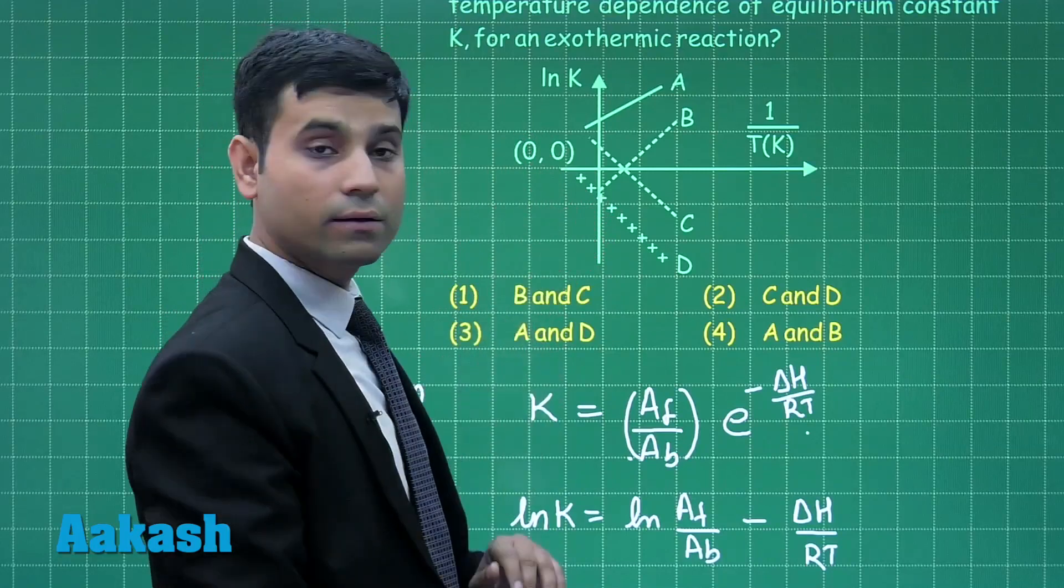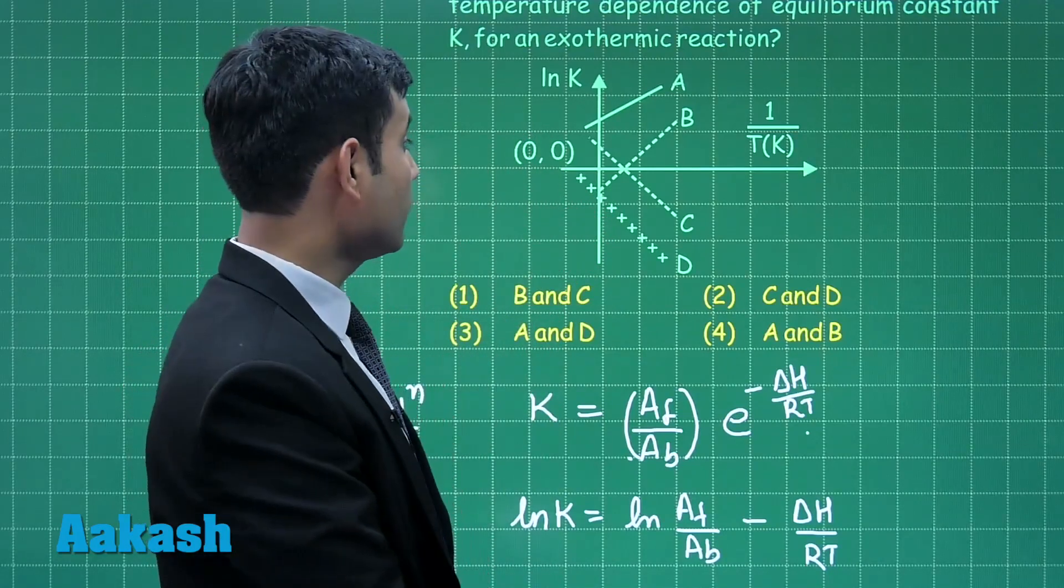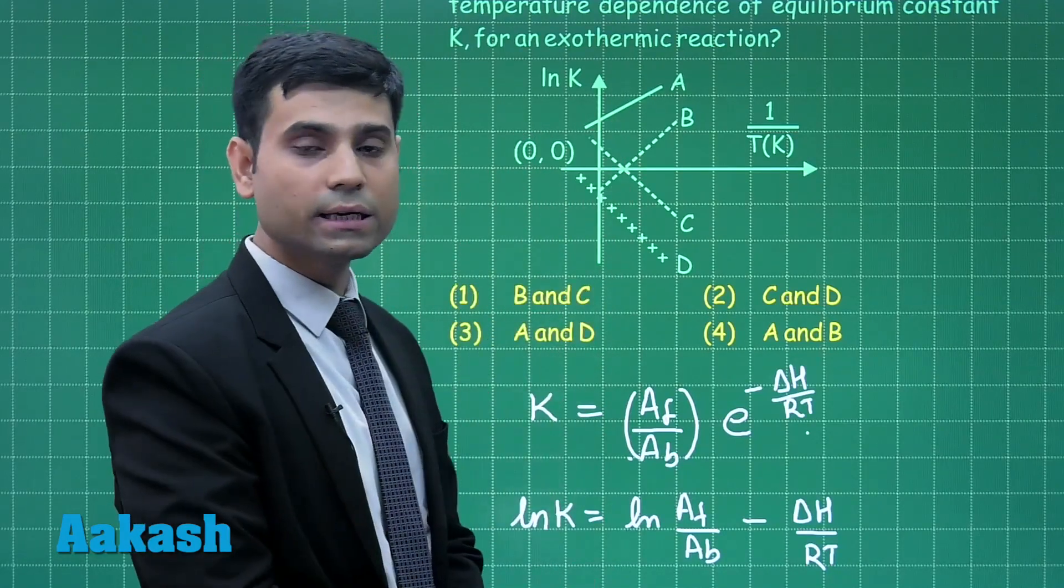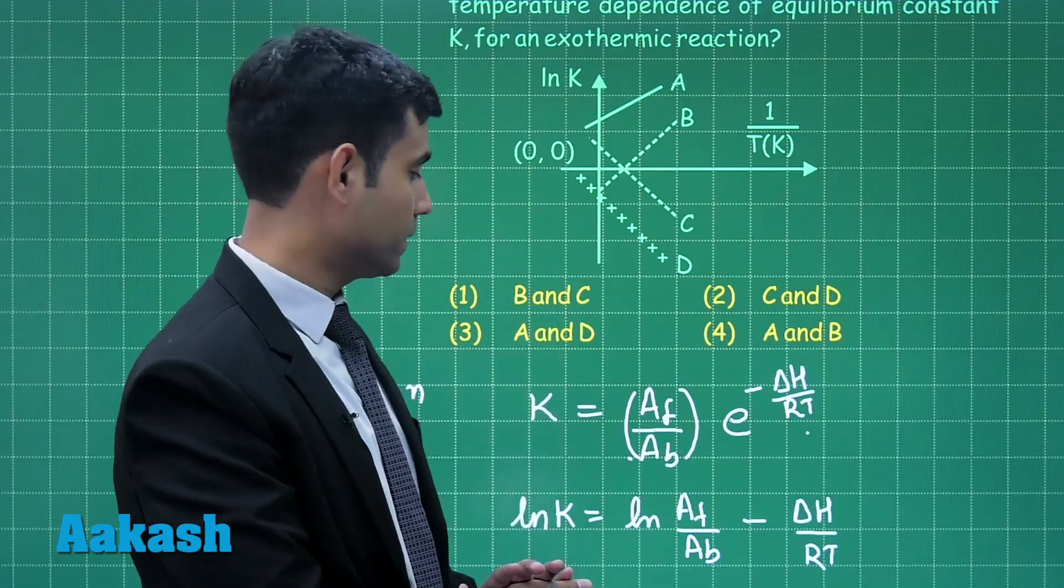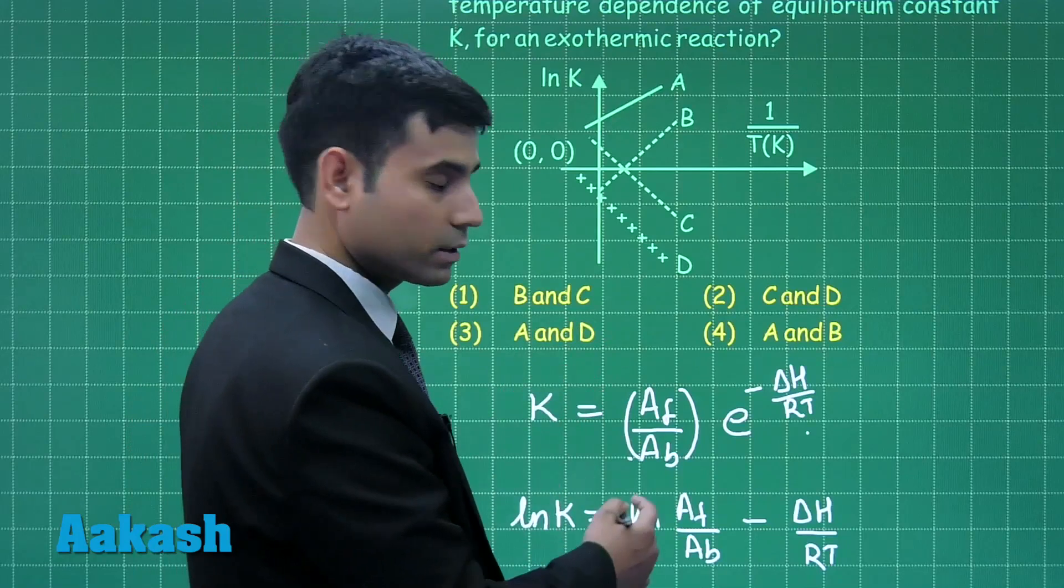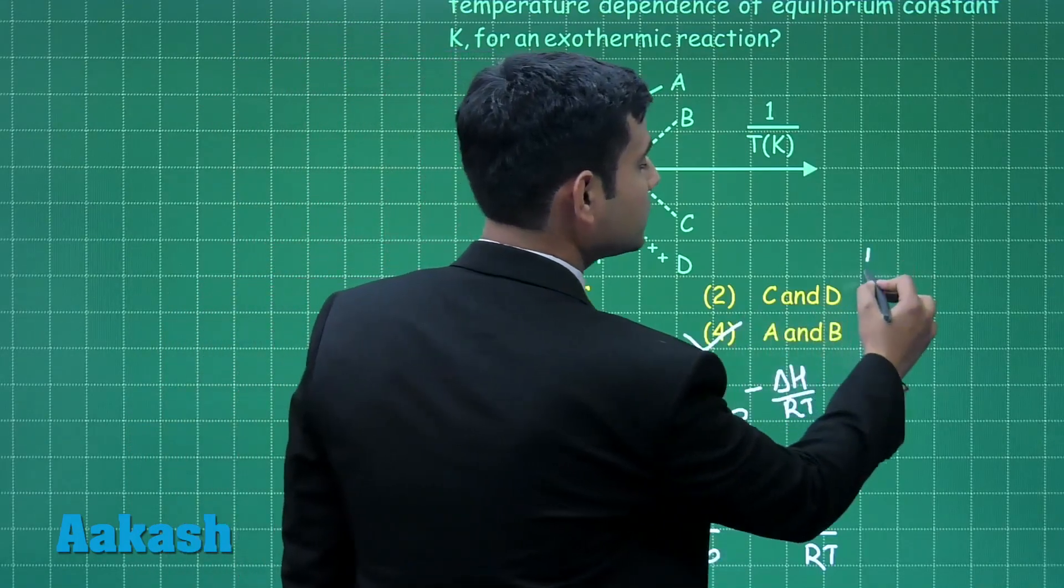If we consider C and D they are decreasing graphs, however A and B are increasing graphs. Hence the correct answer for this question will be A and B which is in option 4. So the correct answer is option 4.